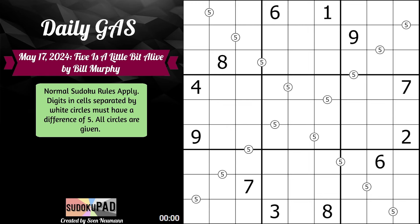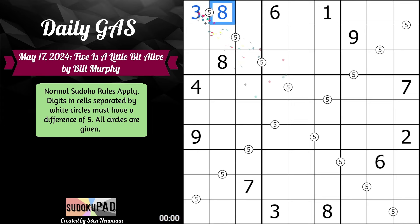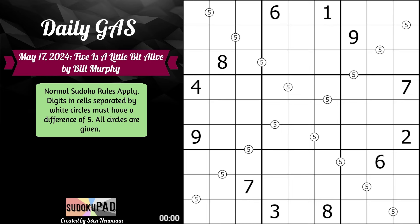So what does that mean? Well, difference of five means, for example, the cells here could be one and six, because one and six have a difference of five with each other. Or you can add one to both: so two-seven, three-eight, or four-nine. Those are all our options along our five pairs.